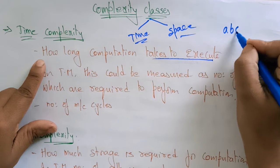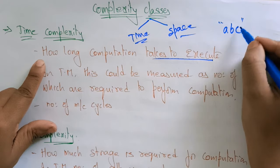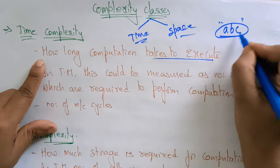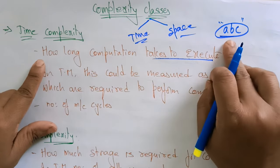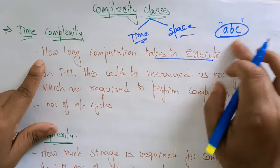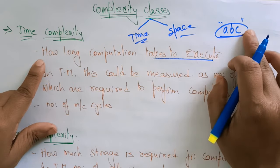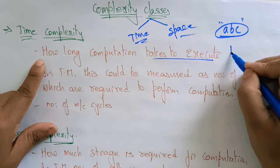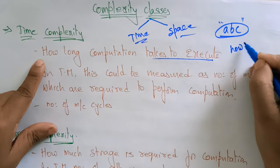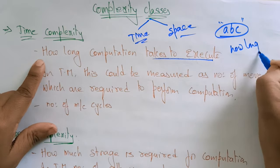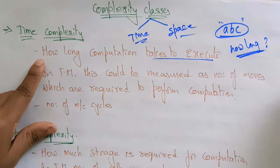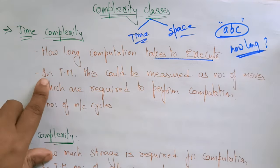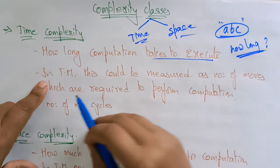So whatever string we are taking, how long the machine is computing that string — that is the time. How long? That is a time complexity. So how long the computation takes to execute determines the time complexity.